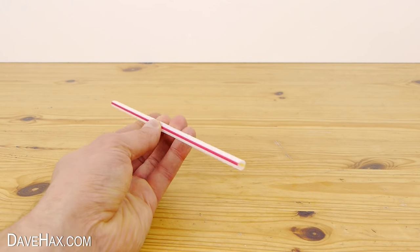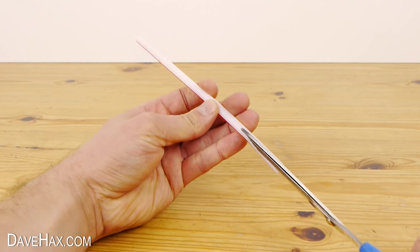Start by taking a straw and use a pair of scissors to put a slice from the bottom all the way to the top.